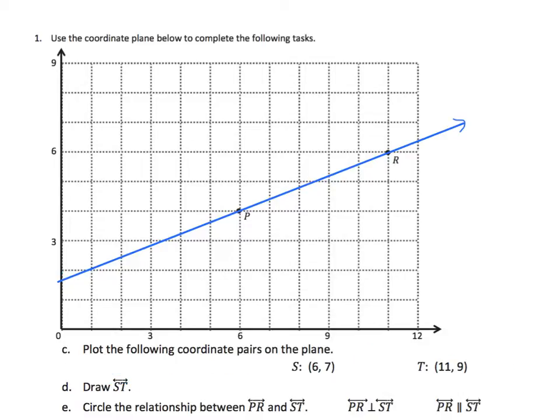Now we continue with some additional tasks. Plot the following coordinate pairs on the plane. We have S at 6, 7. We know 6, and then we'll go up the x-axis, or go up above the 6 on the x-axis, and we'll go until we intersect the 7. And we see that we have a point here. We'll label that S.